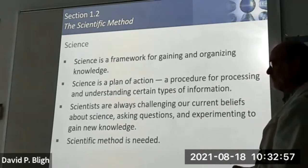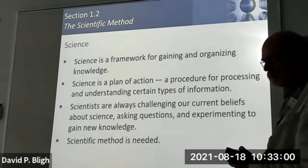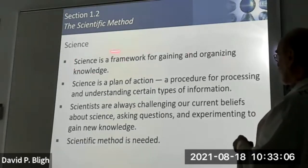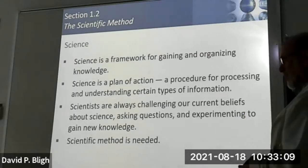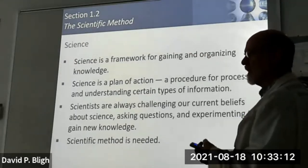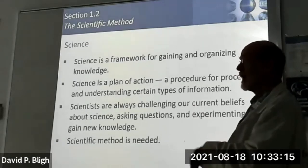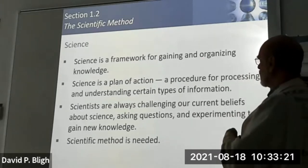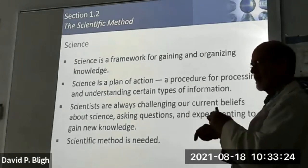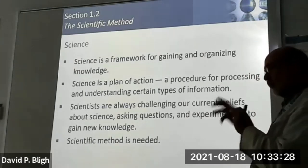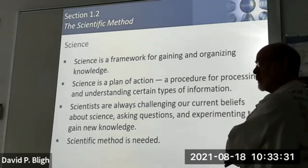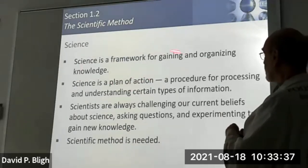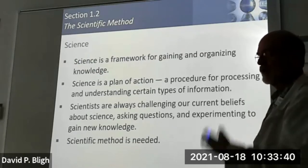That's what science is supposed to help us do. Science is a framework for gaining and organizing this knowledge, and it depends on the discipline. Chemistry has lots of different branches, as do other sciences, and over time they figured out how to use this overall framework in particulars best suited for their discipline. Overall it's trying to gain knowledge and organize that knowledge in an understandable fashion.